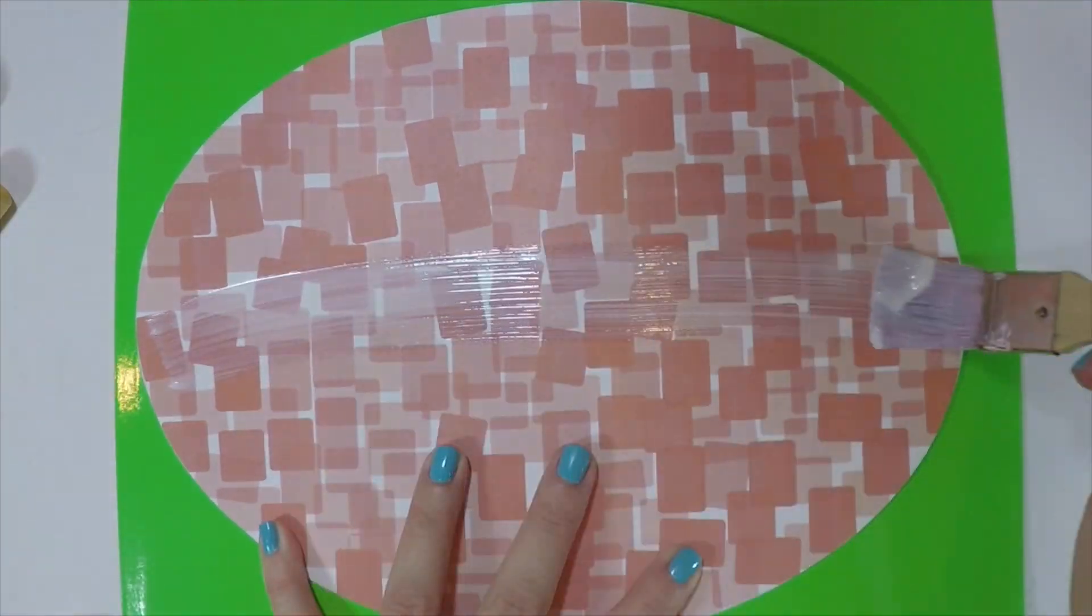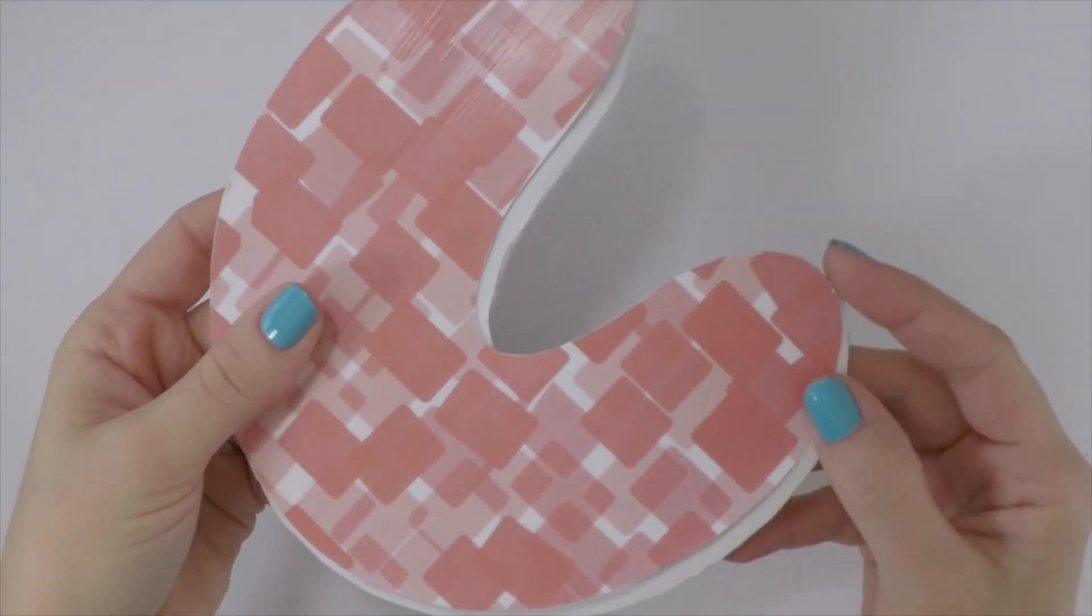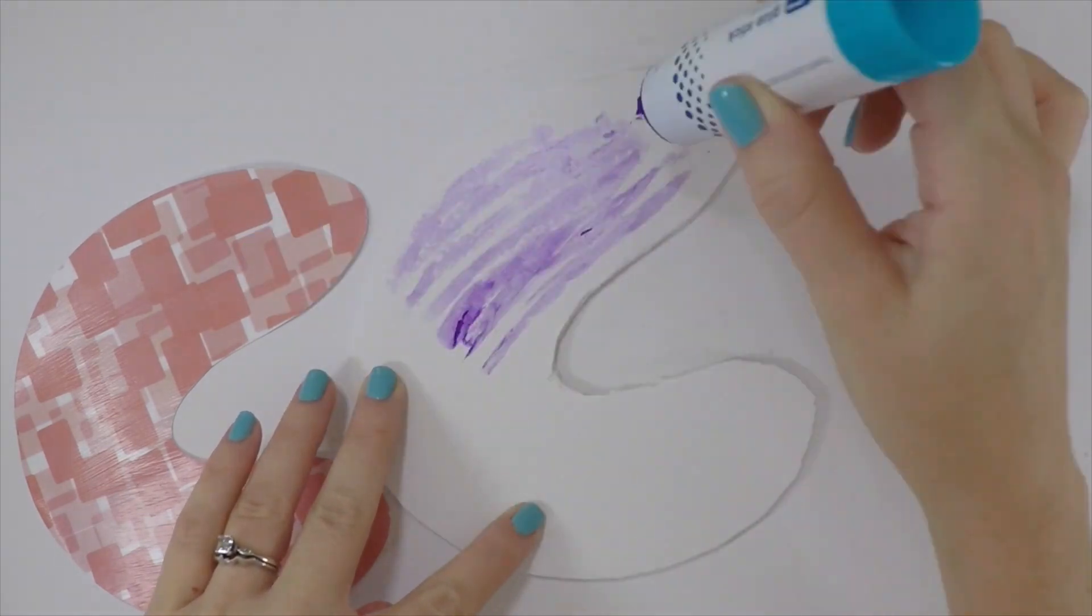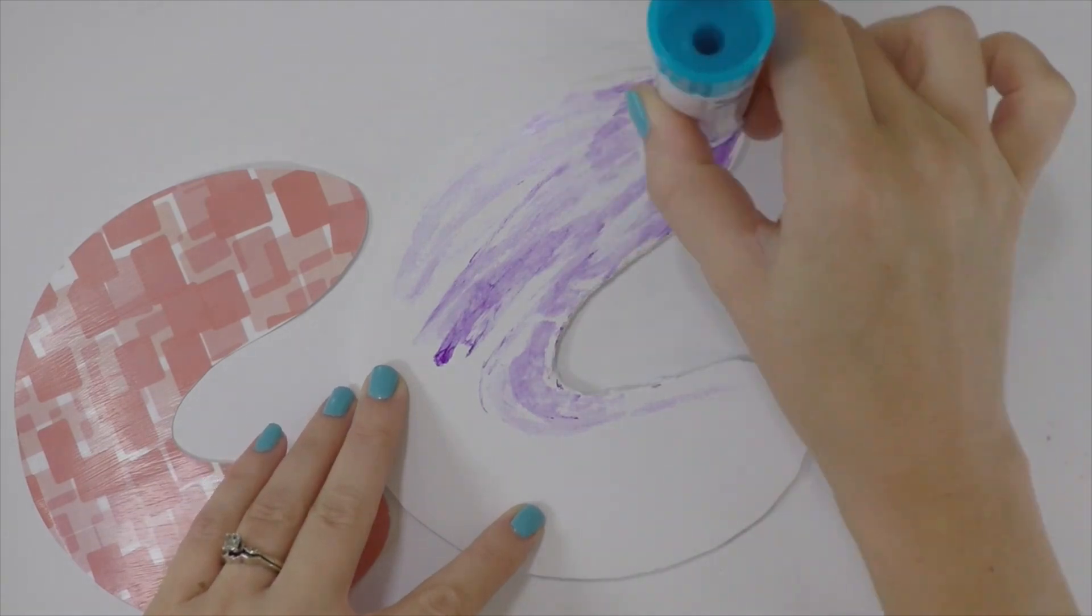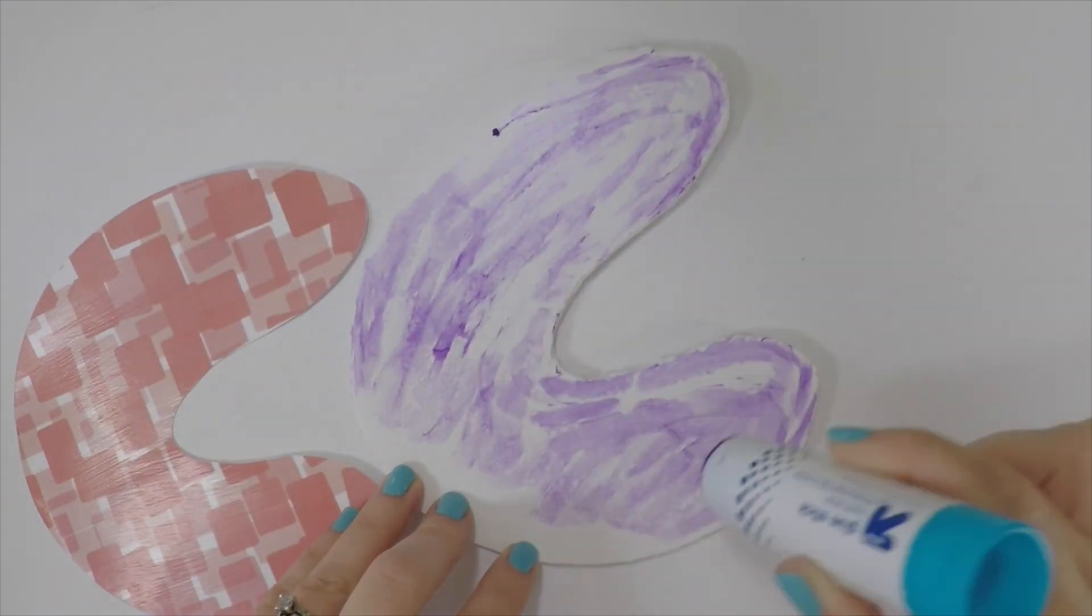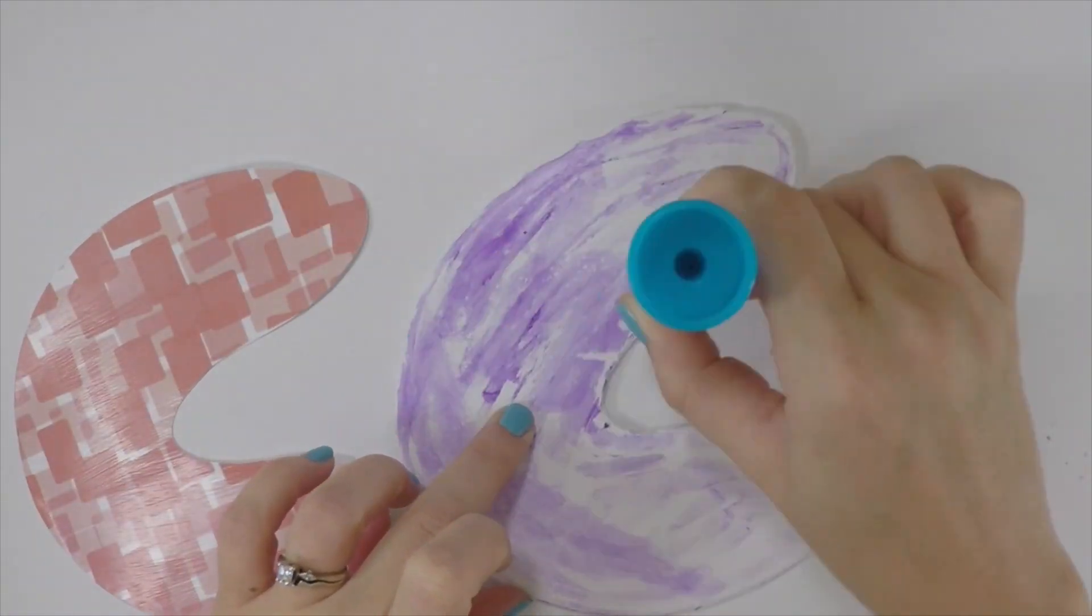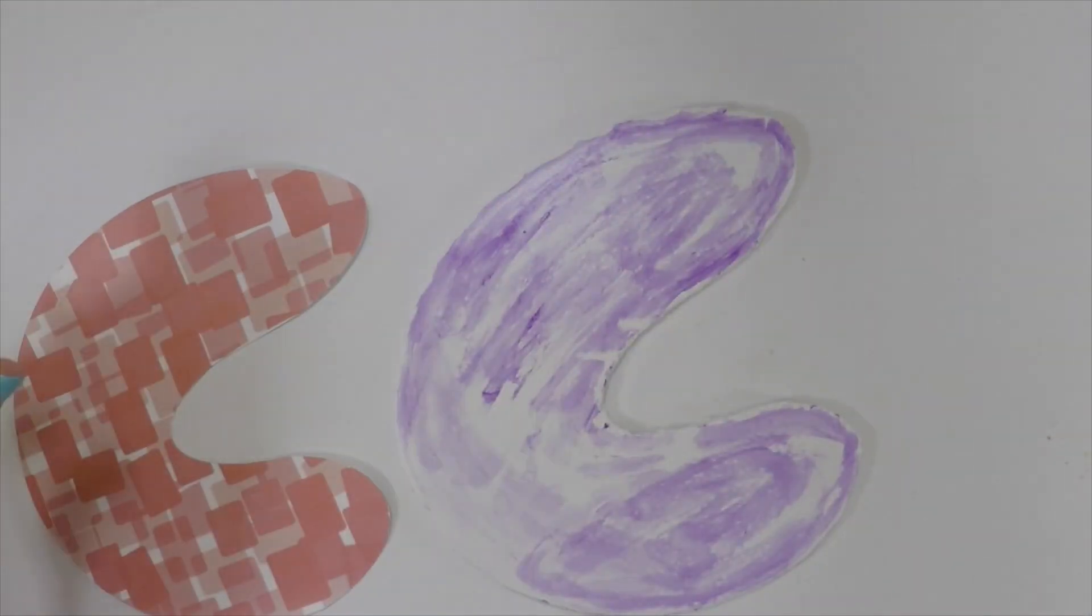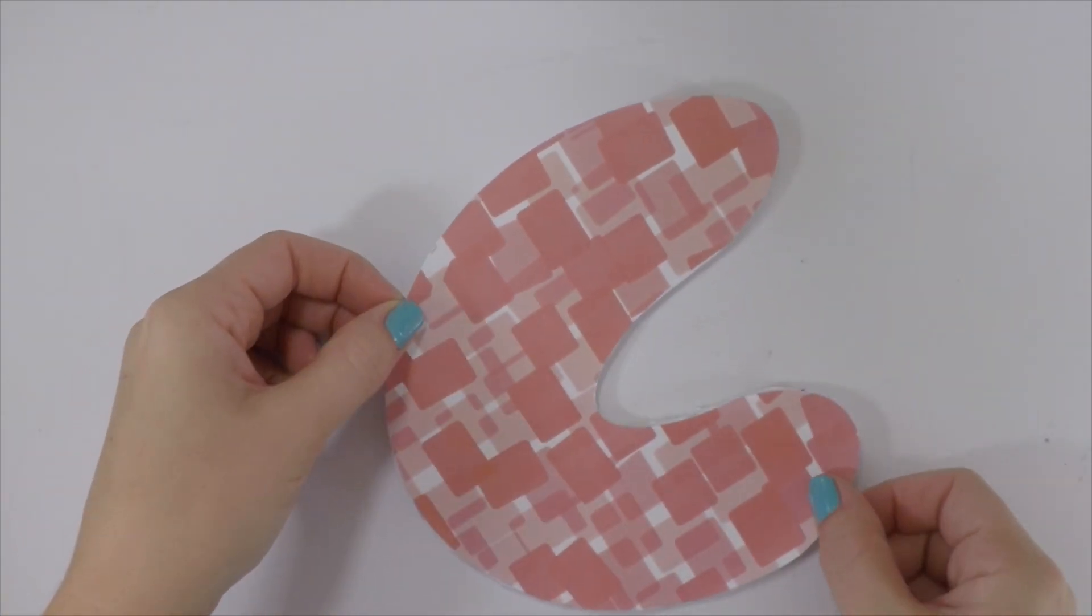Now take the table printables and Mod Podge the top of them, not the foam board, just the paper. Now take a glue stick, apply it to the foam board, and then put the printables on top. For this part you only want to use a glue stick or spray adhesive. You do not want to use Mod Podge because it is water-based and will warp the foam board. You only want to Mod Podge the paper before you put it onto the foam board to give it that glossy look.